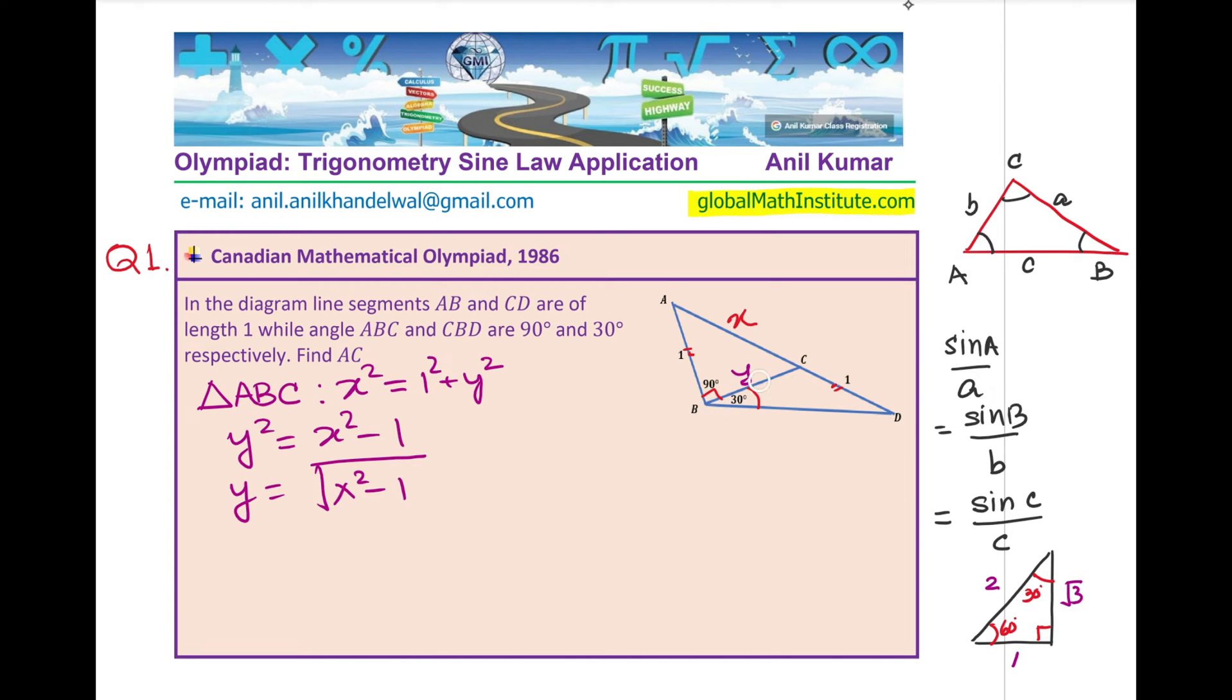So, we get BC in terms of X. So, the idea here is to write all other things in terms of X. Well, these angles are also unknown. So, let's say this angle here at D. Let's call this angle as theta.